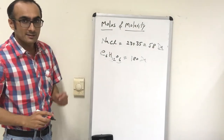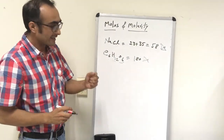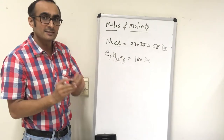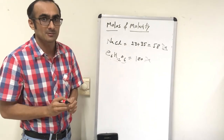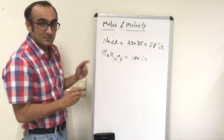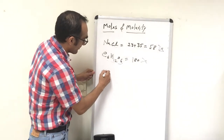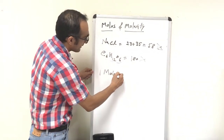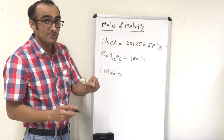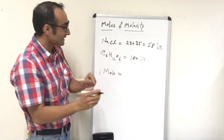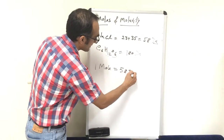So now, moles. One mole of any substance can be defined in terms of weight or in terms of number of molecules. In the case of NaCl, one mole of NaCl, if you want to measure in grams, is equal to its molecular weight in grams, which means 58 grams.